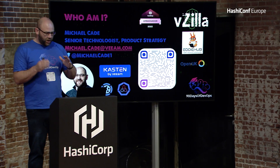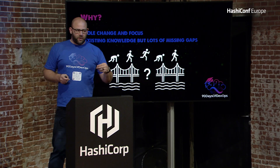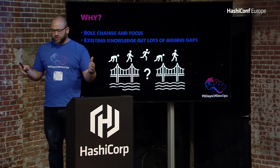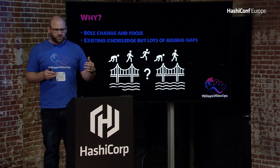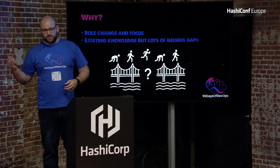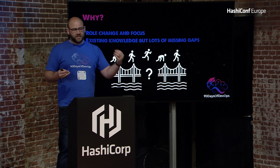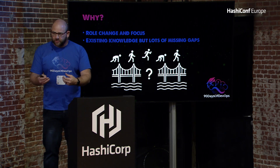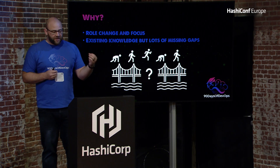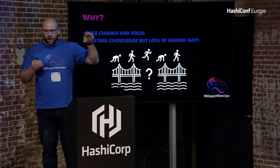About 18 months ago I moved into cloud native technologies within Veeam. I'd been there seven and a half years, coming from an infrastructure and operations background. That role change meant I was talking to a lot of different personas. Although I had existing knowledge — using Terraform to deploy cloud-based workloads and Vagrant for development environments — there were still missing gaps. I described it like Swiss cheese: holes all over it that I needed to fill.